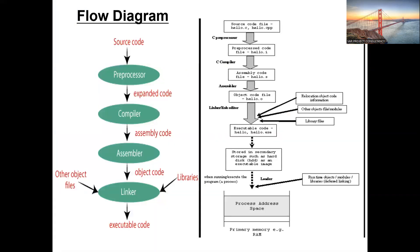This is a flow diagram. The source code implemented by the programmer — if the source code is a .py, .c, or .c++ file, these are the formats of input files. Those files are given to these stages: pre-processed stage, compiler stage, assembler stage, and linker stage. Each stage generates its corresponding output files. The file names are clearly explained at each stage.